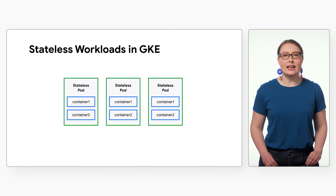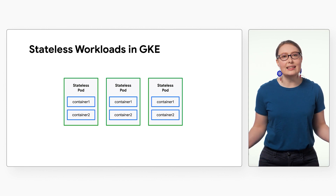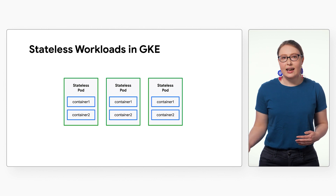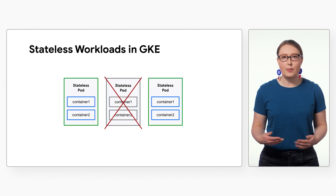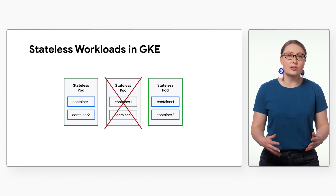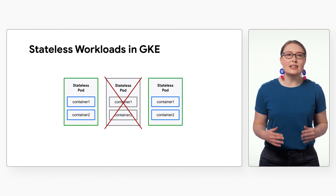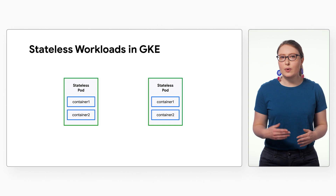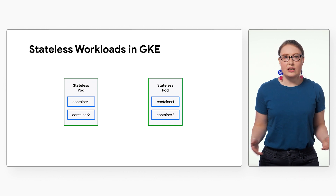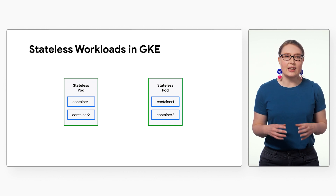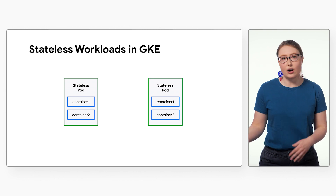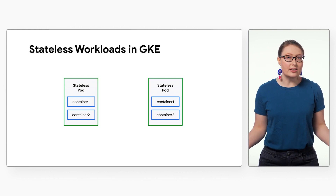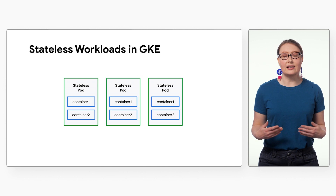From its beginnings, Kubernetes has been well-suited to managing stateless workloads. When a workload does not need to maintain state, it can generally be disrupted and spun back up with minimal interruption to the service. Kubernetes is very good at auto-healing these types of use cases. Generally, when running stateless workloads, we don't get too attached to any specific instance of the workload or of the hardware. If and when a workload fails, Kubernetes will automatically replace it with a new one.